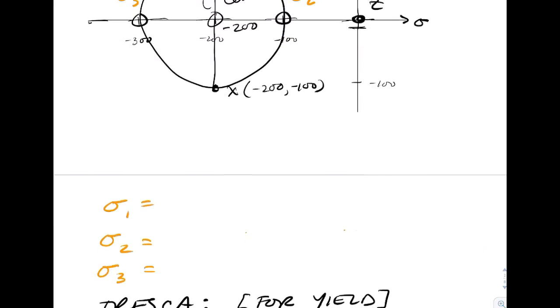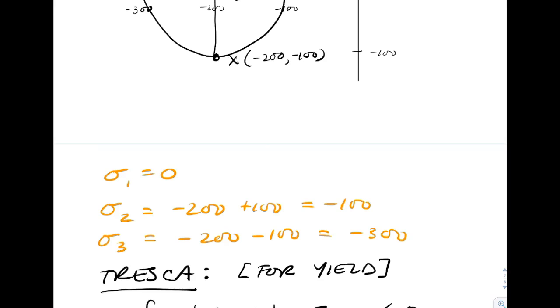We just need to get those numerically. Sigma 1 is 0. Sigma 2 is going to be the center plus r, equal to minus 100. Sigma 3 is going to be minus 200 minus 100, the center minus r. So those are the three principal stresses.